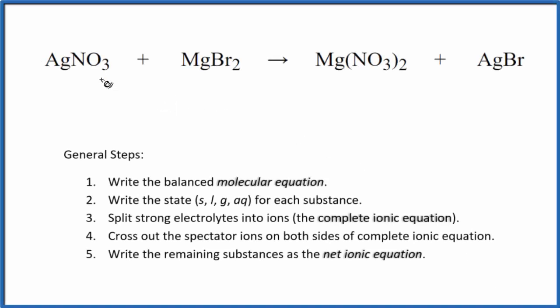In this video, we'll write the balanced net ionic equation for AgNO3 plus MgBr2. That's silver nitrate plus magnesium bromide.